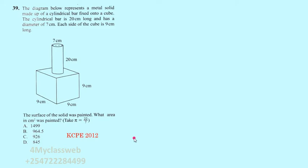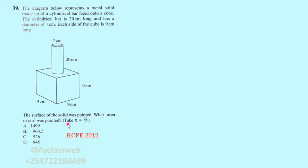This question has been explained through this channel — for my class web — it was question number 39. The question reads: the diagram below represents a metal solid made up of a cylindrical bar fixed onto a cube. The cylindrical bar is 20 centimeters long and has a diameter of seven centimeters. Each side of the cube is nine centimeters long. The surface of the solid was painted. What area in centimeters squared was painted? Take pi to be 22 over 7.